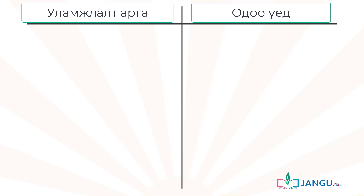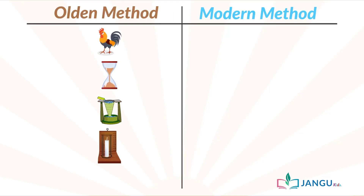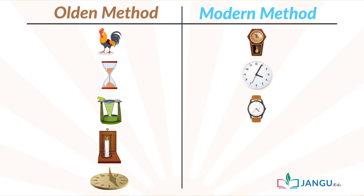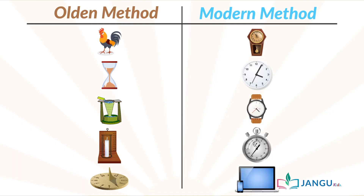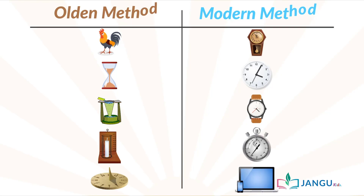In the olden days, people used different things to know what time it was. They used the sound of certain animals, hour glasses, water clocks, candle clocks, and they sometimes used shadow clocks. But now we use things like pendulums, wall clocks, wristwatches, and stopwatches. We can also check the time on the mobile phone or on a computer. We usually start counting time using seconds.